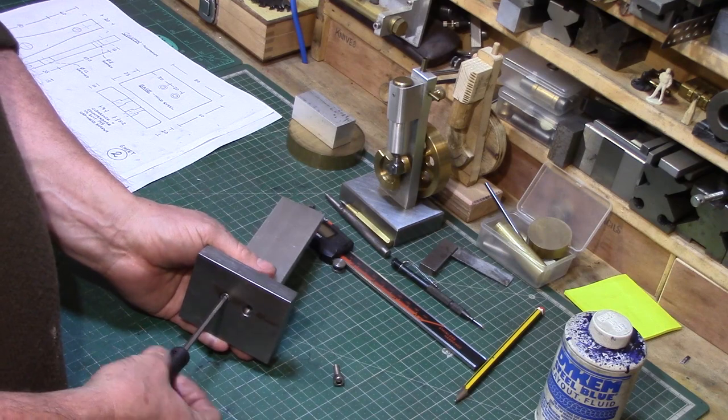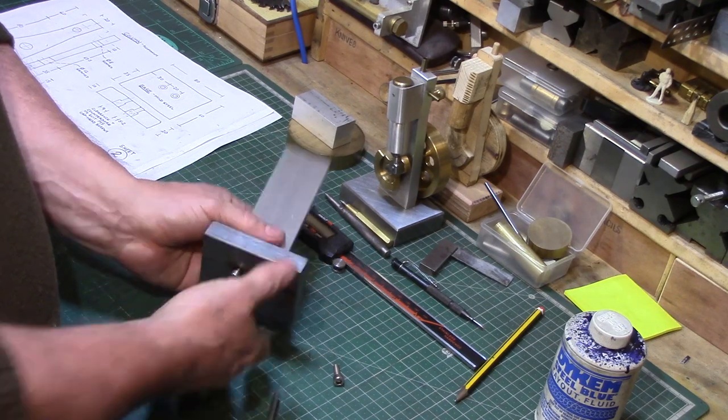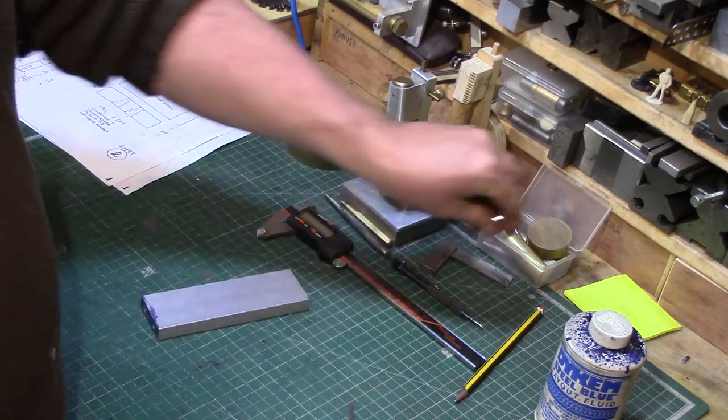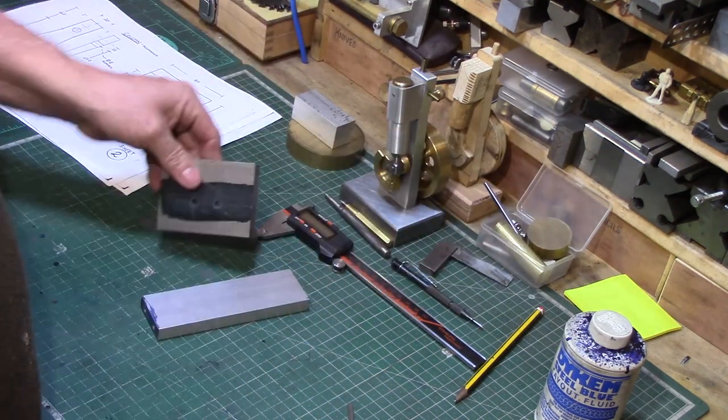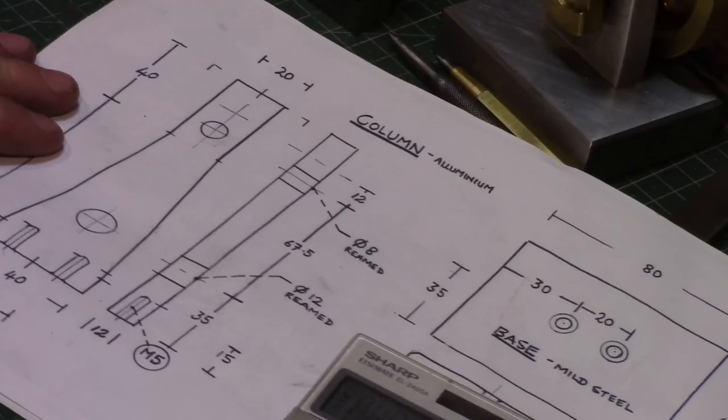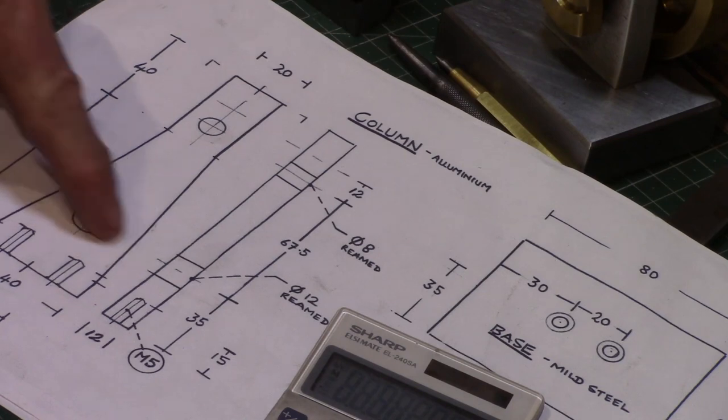Welcome to part two of my Wigwag engine build series. In the last video we started with the engine base and fitted it to the column. Today we will continue with the column, drilling and reaming the holes for the bronze bearings and shaping the column on the mill.